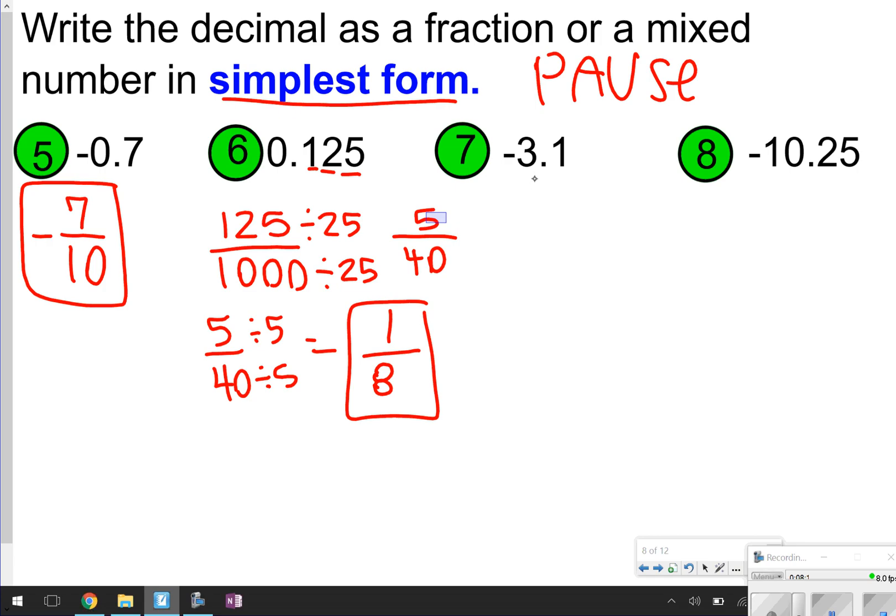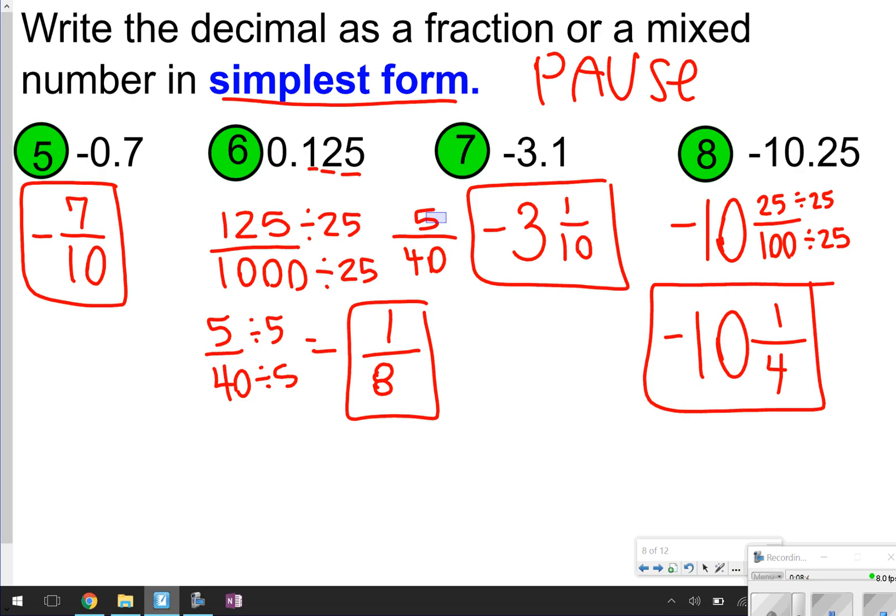Number 7, negative 3 and 1/10. So, negative 3 is my big number and 1/10 is my fraction. Already simplified, so I'm good to go. And the last one for number 8, negative 10 and 25/100. Again, think about quarters here and that's going to be your greatest common factor. 25 divided by 25 is 1, 100 divided by 25 is 4. So, I have negative 10 and 1/4 as my answer for number 8.